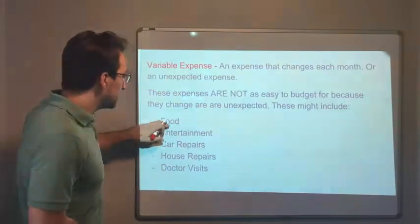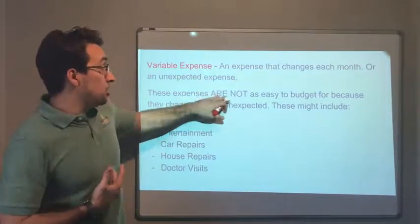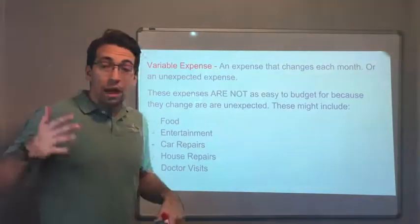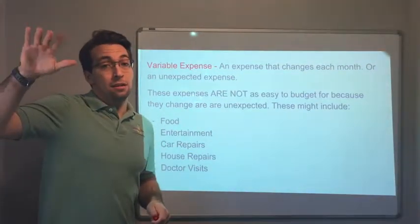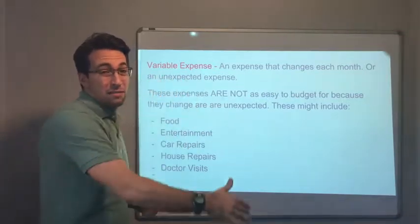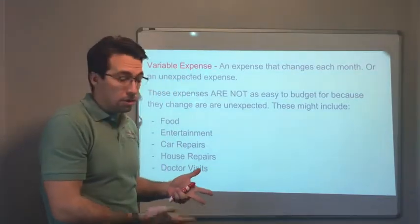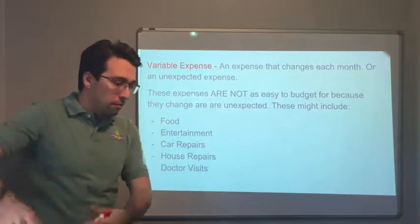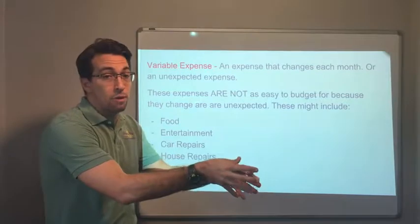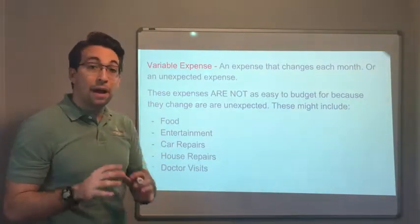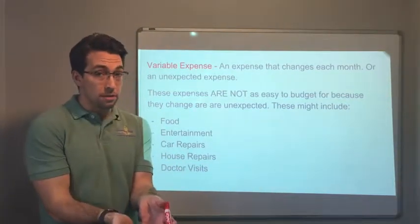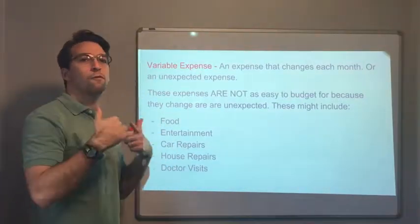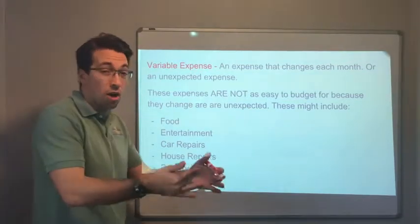Variable expenses are not as easy to budget for — they can change and are sometimes unexpected. Food is a good example: going out to eat every night is more expensive than cooking at home. Buying steaks is more expensive than buying chicken, and ramen noodles are the cheapest. People ebb and flow with their food budget — sometimes you go out a lot, sometimes you stay home.